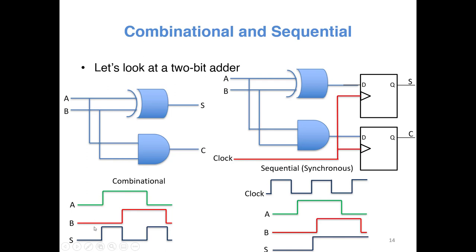Look at the example of a two-bit adder. Here you have a combinational adder with an XOR gate and an AND gate. Here you have a sequential adder — you hook up flip-flops at the output of the combinational circuit. Looking at the timing diagram: for the combinational circuit, as soon as you give the input, the sum changes immediately. But in the sequential circuit, although inputs are changing, the output changes only during the clock transition. These are positive edge-triggered D flip-flops, so the output changes only during the positive edge of the clock — inputs are not propagated to the output when the clock is steady.